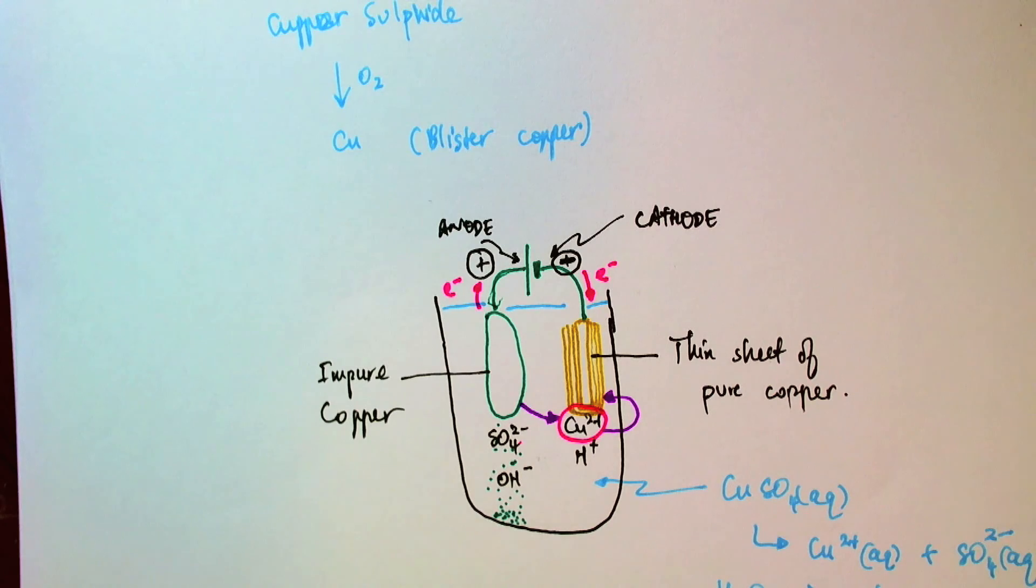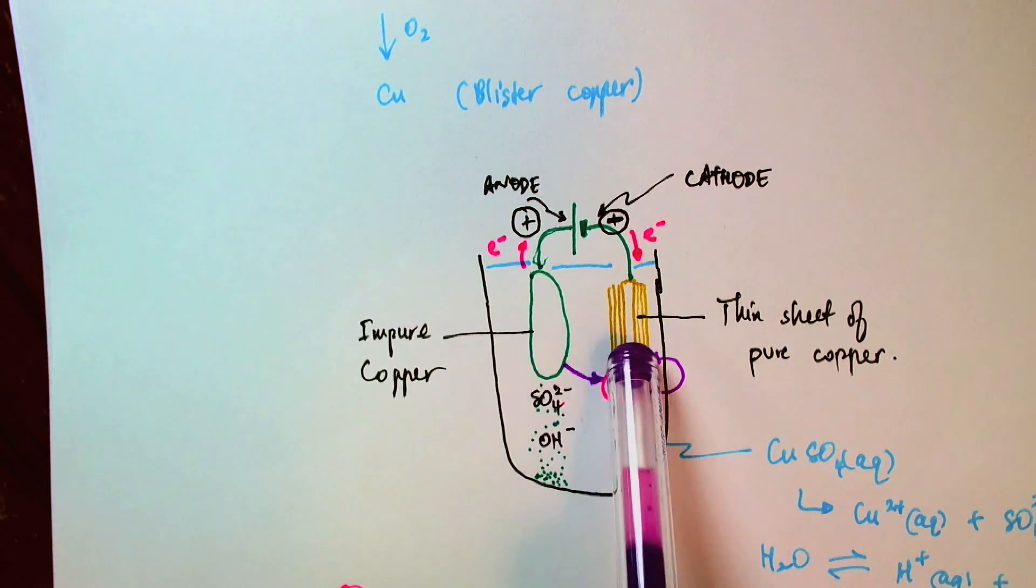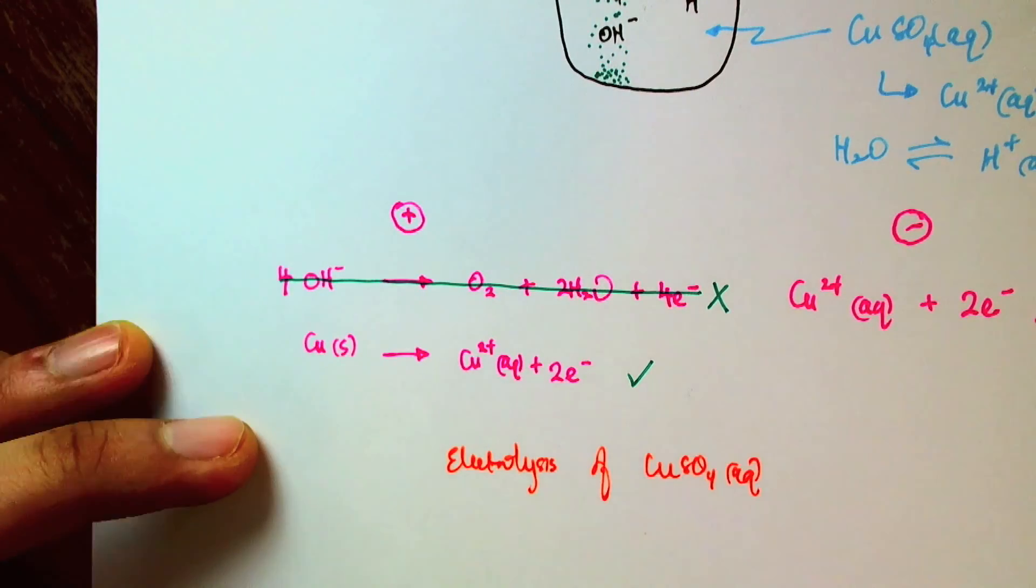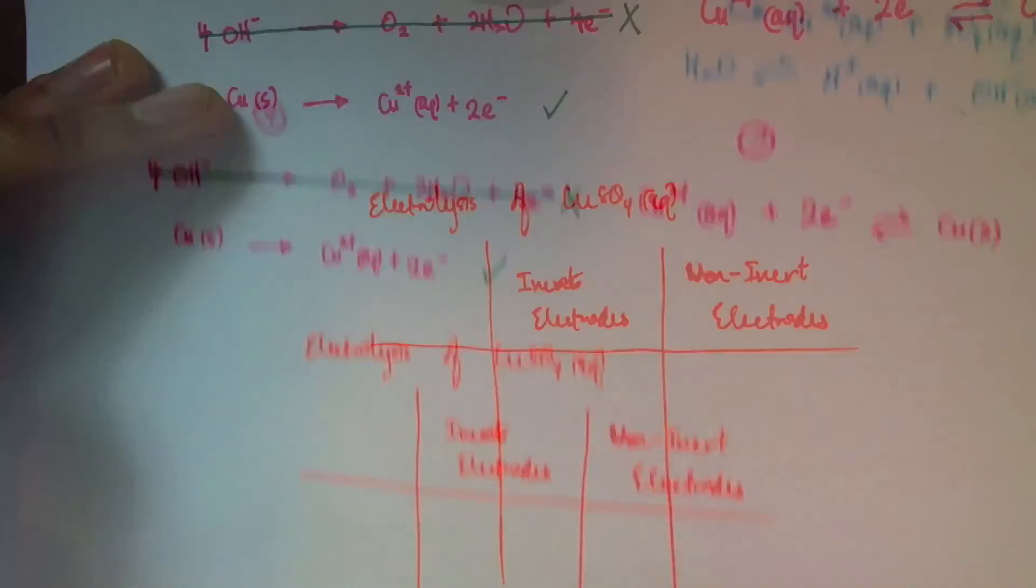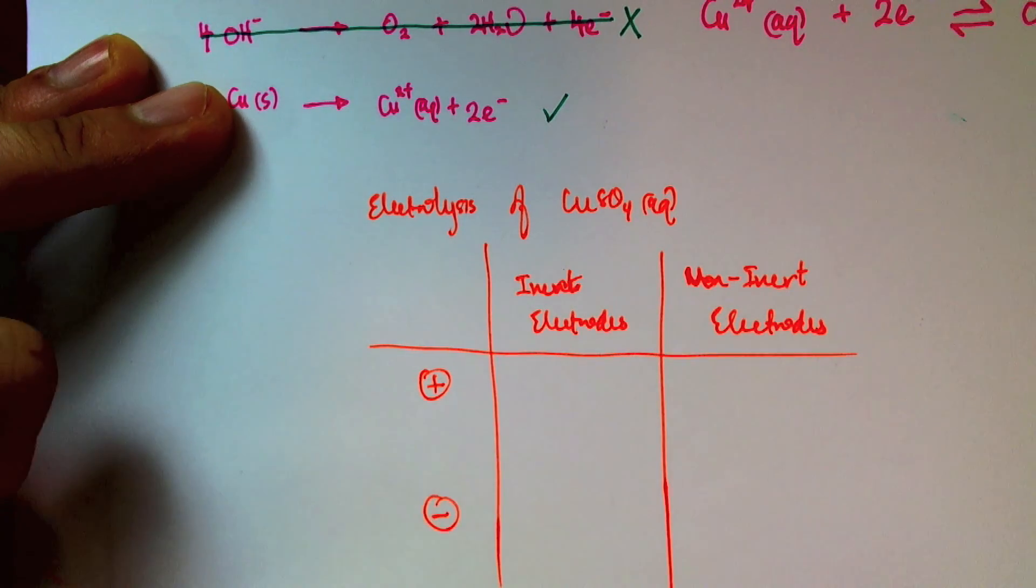Now, in the last video, we had looked at the electrolysis of copper sulfate using inert electrodes. While in this case, we're electrolyzing copper sulfate using non-inert electrodes. So to conclude, I would like to look at the differences and similarities between the electrolysis of copper sulfate using inert electrodes and, as in this case, using non-inert electrodes. The anode and the cathode.